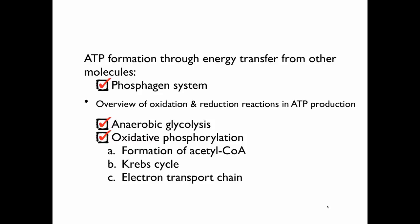As a quick summary, we've talked about three ways in which ATP can be regenerated. One is a one-step reaction: the phosphagen system. Another is 10 steps: anaerobic glycolysis. And the final is a lot of steps, but it can produce a whole ton of ATP.